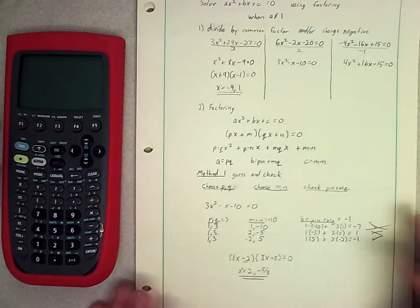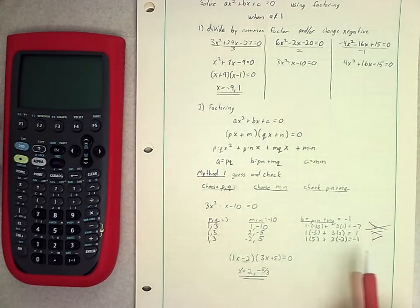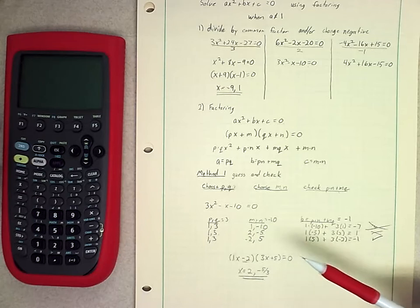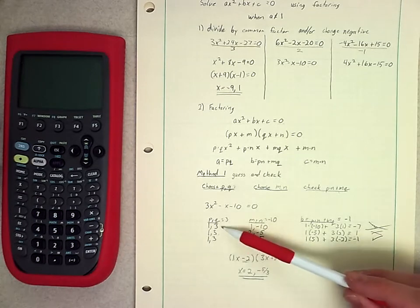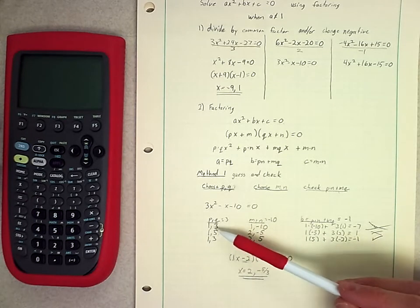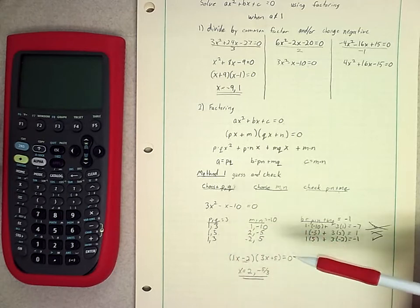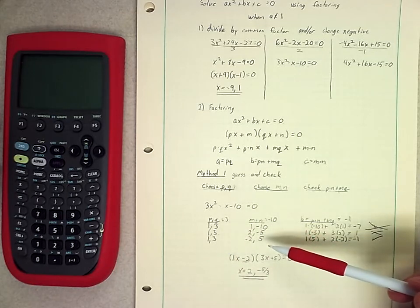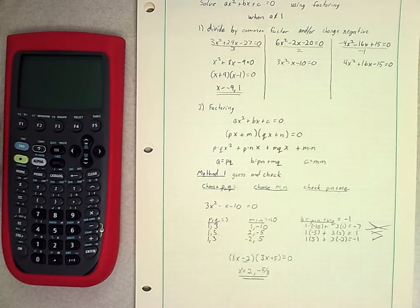So we were able to get to an answer here eventually by just guessing and checking the different options. And again, that wasn't too long because it only took us three chances to try to get there. If you have multiple options here for what p and q can be and multiple options here for what m and n can be, that can get very tedious. It doesn't take long before you have to go through a very long string of things to hopefully get to the right answer. So let's see if we can find a method that helps us get to our answer a little bit more quickly.